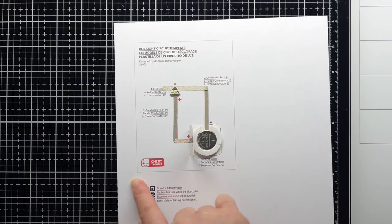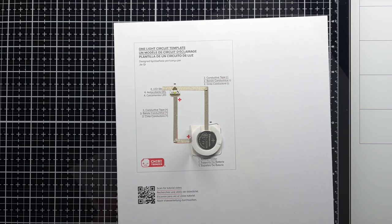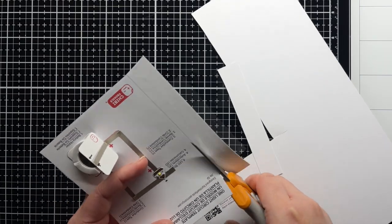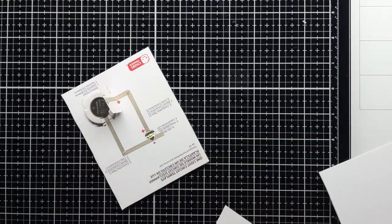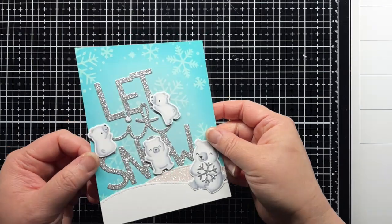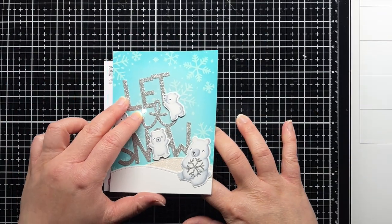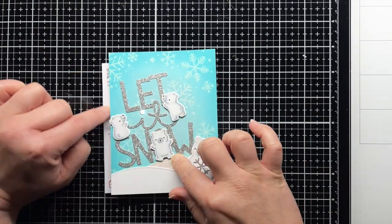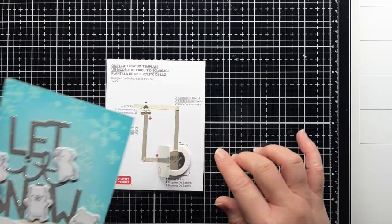At this point, you can trim the template down to an A2 panel and adhere it to a card base for your design. You can see that I'll need to trim a little off the left side of the template so that it fits securely under my card front, and I'll show you how to do that a little later.